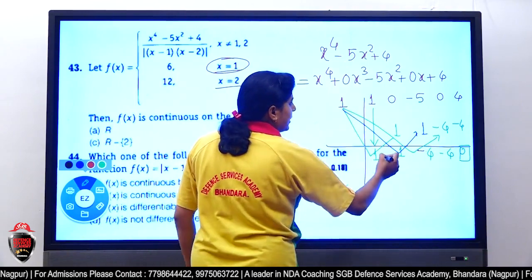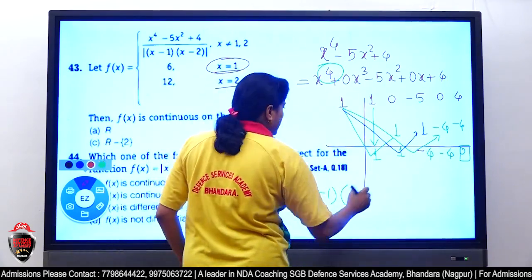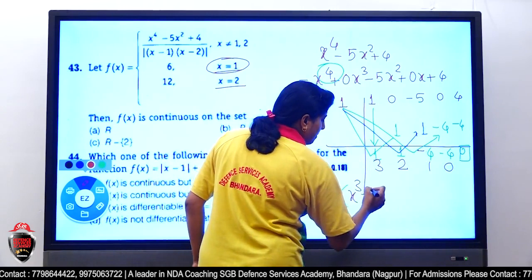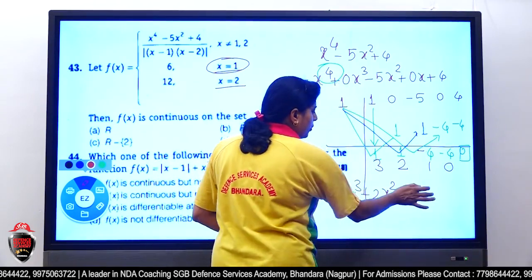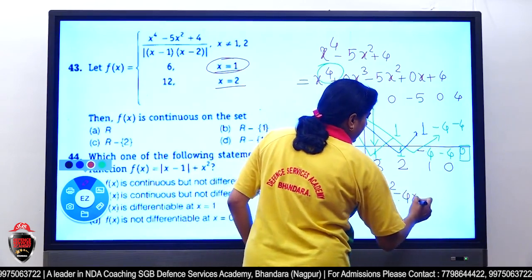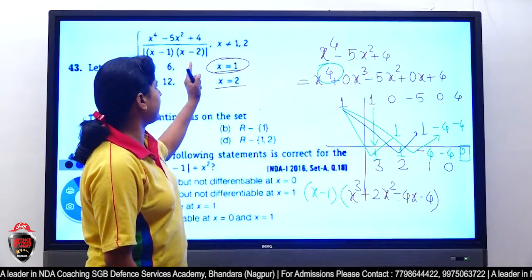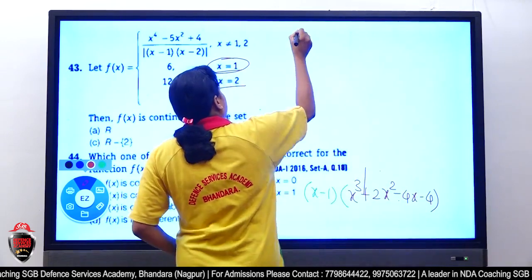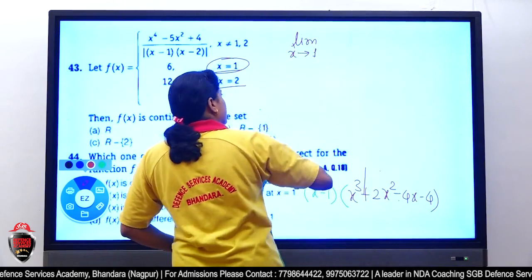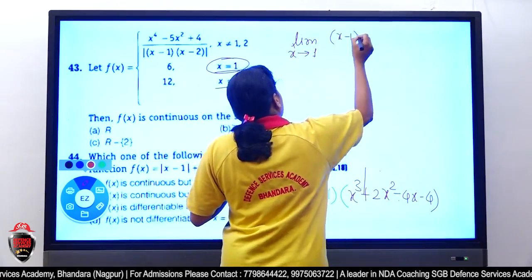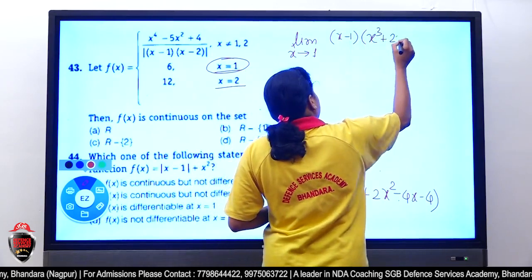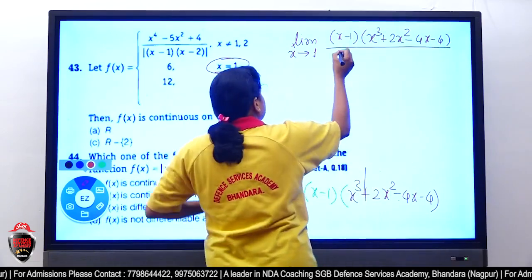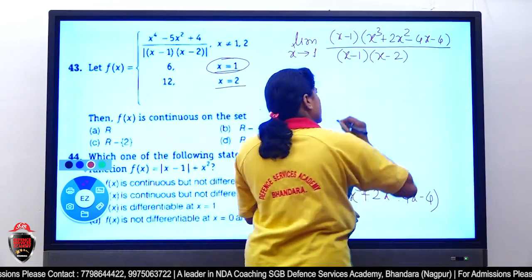The remaining cubic quotient is x³ + x² − 4x − 4. Now solving for the first limit: limit x tends to 1 of (x − 1)(x³ + 2x² − 4x − 4) upon (x − 1)(x − 2). The (x − 1) terms cancel, so we substitute x = 1 directly.